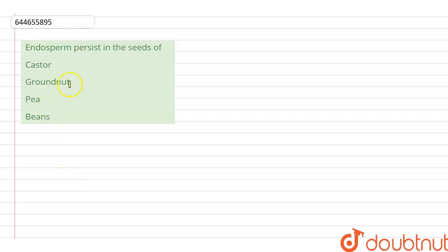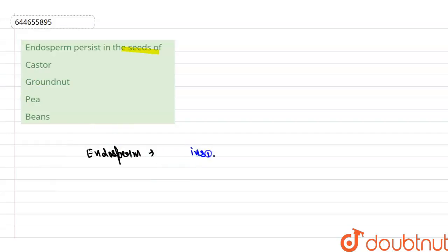The question says that androsperm persists in the seed form. So in this question we are asked about the androsperm. First of all, what is the androsperm? Androsperm is a tissue that is present inside the seed in most of the flowering plants during the time of fertilization.